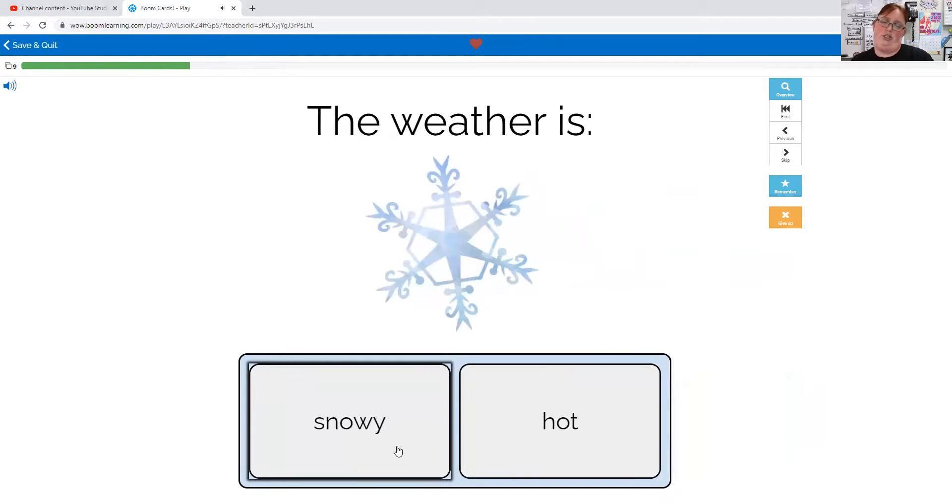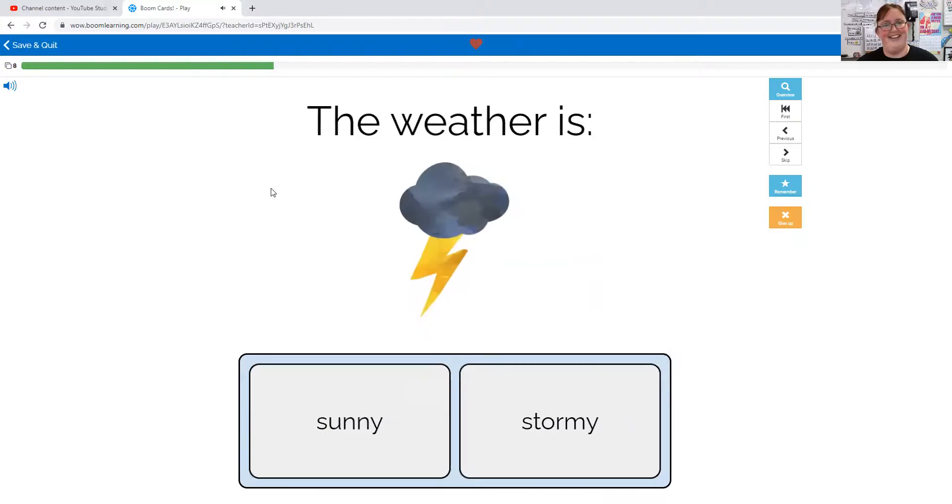The weather is snowy or hot. That looks like a snowflake, it's snowy. The weather is sunny or stormy. I don't see the sun, it's stormy weather.